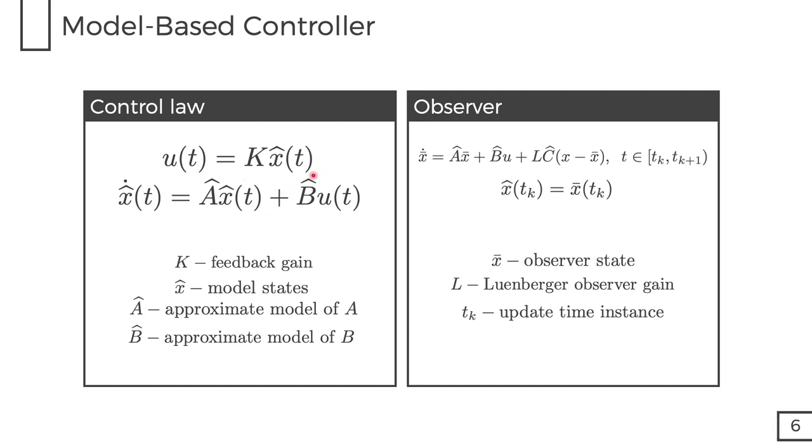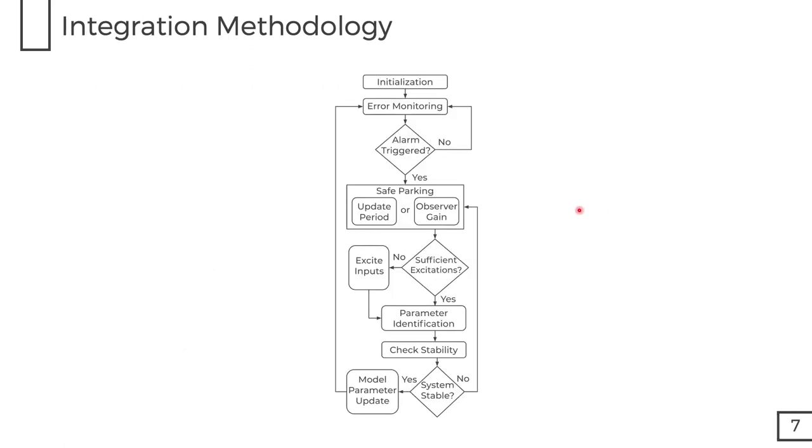A stabilizing feedback controller is designed when it takes the following form, where k is a feedback gain. The model equations that are embedded in the controller take the following form, where x_hat is the model states. In order to estimate the unmeasured states, a Luenberger observer of the following form is designed, and when model state updates occur, the model states are updated with the observer states. The following flowchart summarizes the proposed methodology.